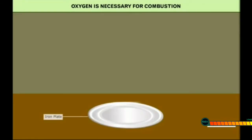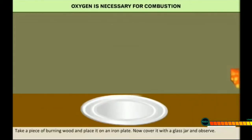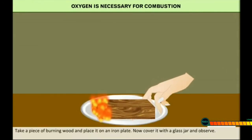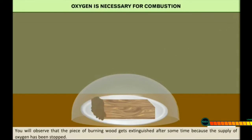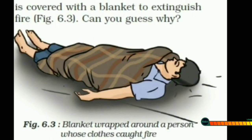In activity 6.3, we again observe that oxygen is necessary for combustion. Take an iron plate and place a piece of burning wood on it. Cover it with a glass jar and observe — the piece of burning wood gets extinguished after some time because the supply of oxygen has been stopped. We can conclude that oxygen is necessary for the combustion process.